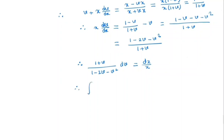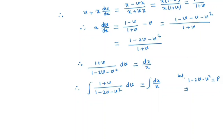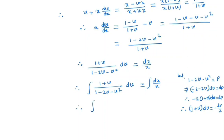By integrating both sides, let p equal to 1 minus 2v minus v squared, so dp is equal to minus 2(1 plus v) dv, meaning (1 plus v) dv equals minus dp/2. The left-hand integral becomes minus (1/2) integral dp/p, and the right-hand integral is integral dx/x, which equals log x plus c.